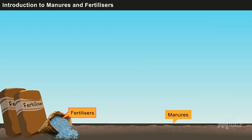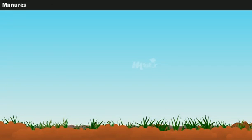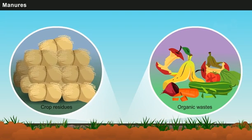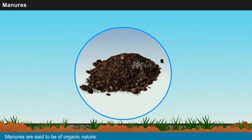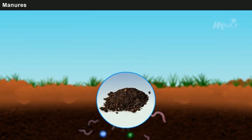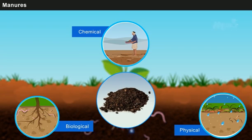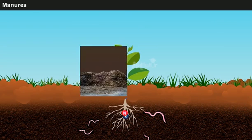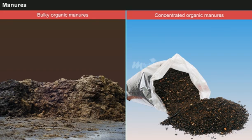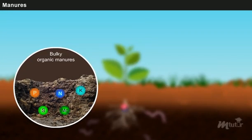Manures are generally denoted as the materials that are derived from organic wastes and crop residues without the addition of any other chemical components. Thus, manures are said to be of organic nature. They provide various nutrients to the plants. In addition, manures also contribute in improving the physical, chemical and biological properties of the soil. Manures can be categorized into two types based upon the concentration of the plant nutrients that it provides: bulky organic manures and concentrated organic manures.